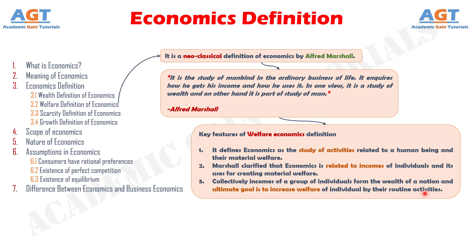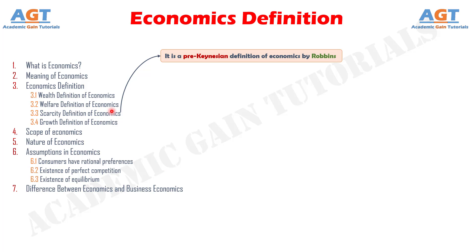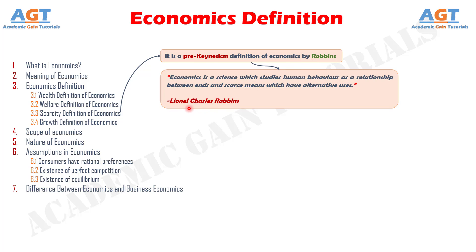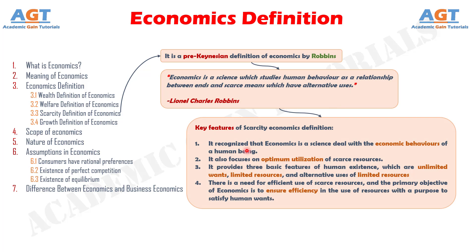Then we have the scarcity definition of economics. It is a pre-Keynesian definition by Robbins in his book Essays on the Nature and Significance of Economic Science in 1932. According to Lionel Charles Robbins, economics is a science which studies human behavior as a relationship between ends and scarce means which have alternative uses. The key features are: it recognizes economics as a science dealing with economic behavior, it focuses on optimum utilization of scarce resources, it provides three basic features of human existence — unlimited wants, limited resources, and alternative uses of limited resources — and the primary objective is to ensure efficiency in the use of resources to satisfy human wants.